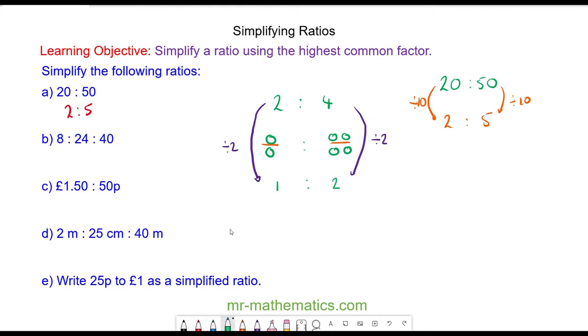For question B, we have 8 to 24 to 40. The highest common factor of all the numbers is 8, so we'll divide everything by this. 8 divided by 8 is 1, 24 divided by 8 is 3, and 40 divided by 8 is 5. So the simplified ratio is 1 to 3 to 5.